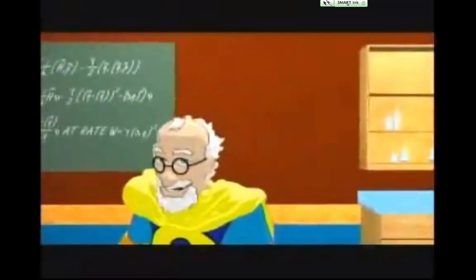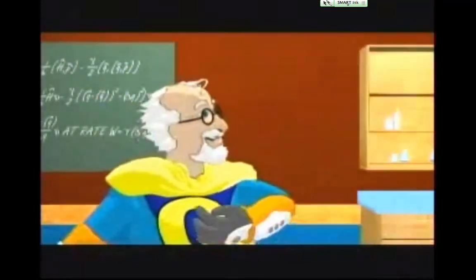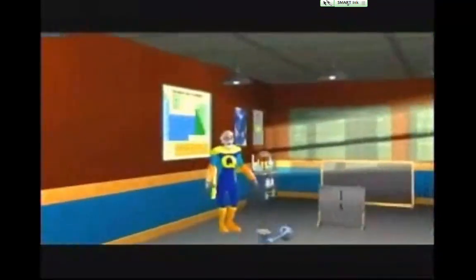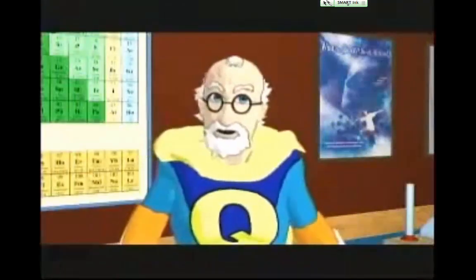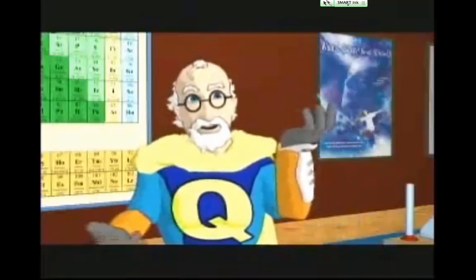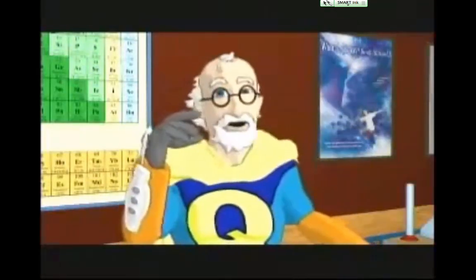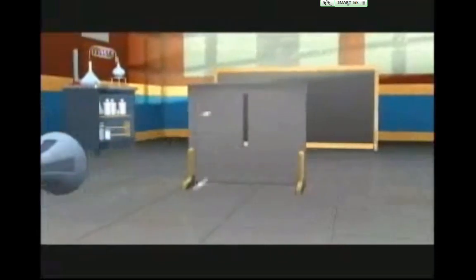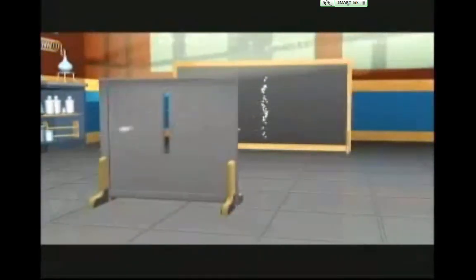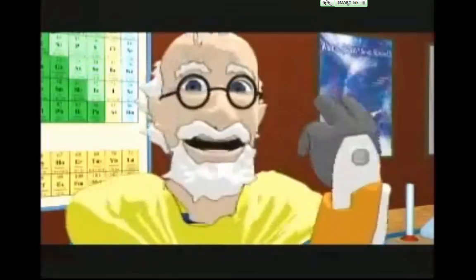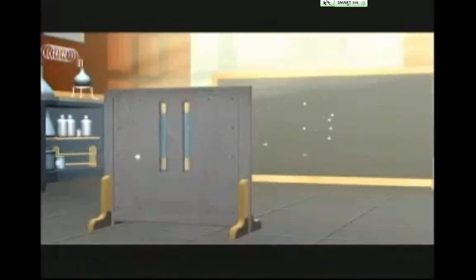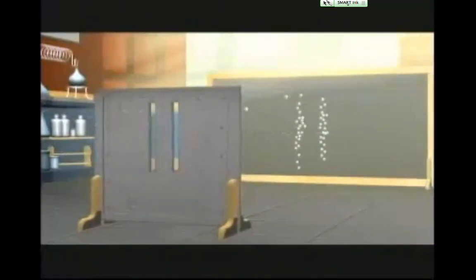And here we are, the granddaddy of all quantum weirdness, the infamous double slit experiment. To understand this experiment, we first need to see how particles, or little balls of matter, act. If we randomly shoot a small object, say a marble, at the screen, we see a pattern on the back wall where they went through the slit and hit. Now, if we add a second slit, we would expect to see a second band duplicated to the right.